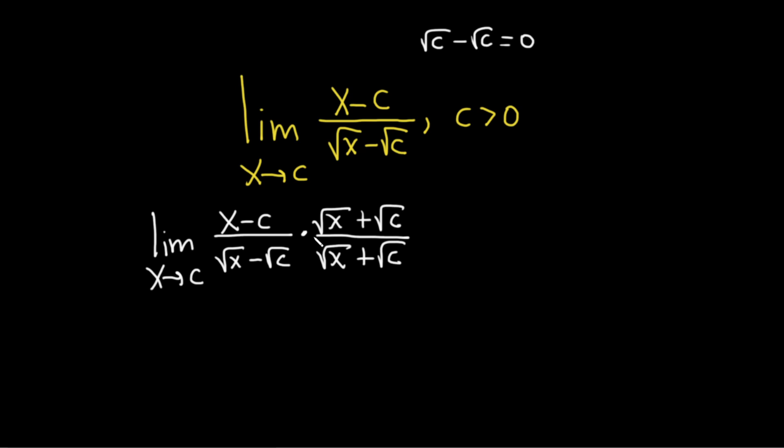The reason you do it on the top and on the bottom is because you're basically multiplying by 1, right? So we're not really doing anything except multiplying by 1. And the reason we're doing this is because now we're going to use a very powerful formula.